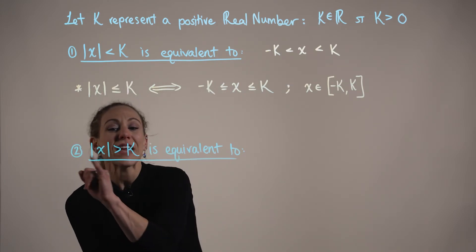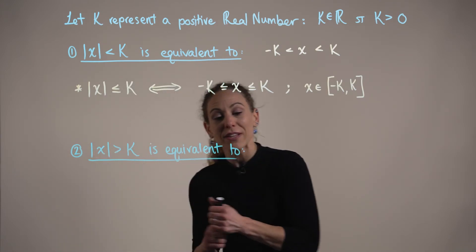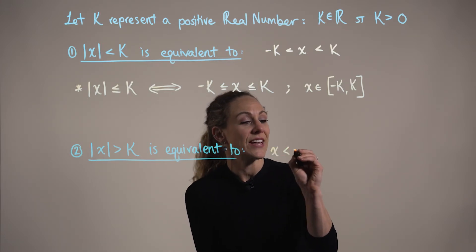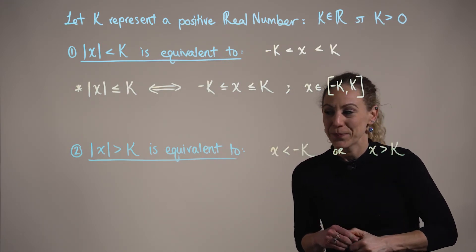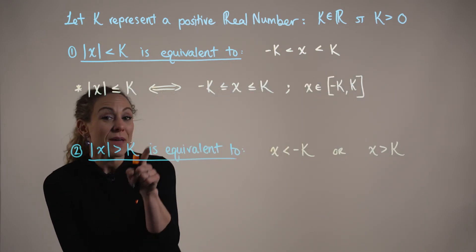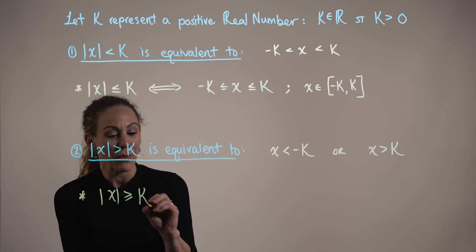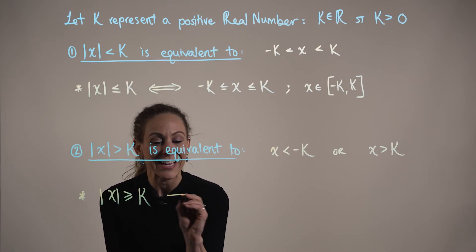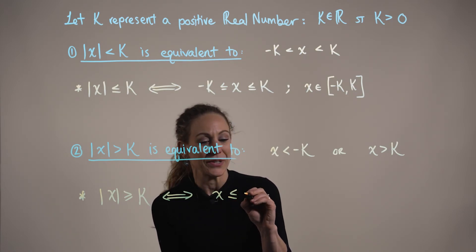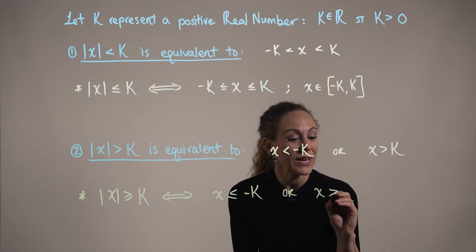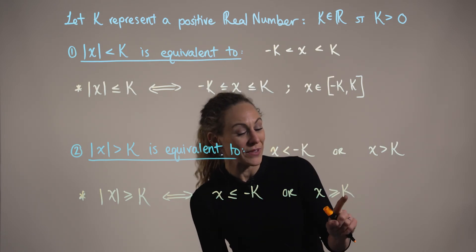In case two, if we have the absolute value of x being strictly greater than a positive constant k, this is equivalent to saying that x is going to be strictly less than negative k or strictly greater than positive k. Just like with case one, this same idea applies if we consider the absolute value of x being greater than or equal to positive k. That absolute value inequality is equivalent to x being less than or equal to negative k or x being greater than or equal to positive k. Notice we are including the endpoints in these intervals.